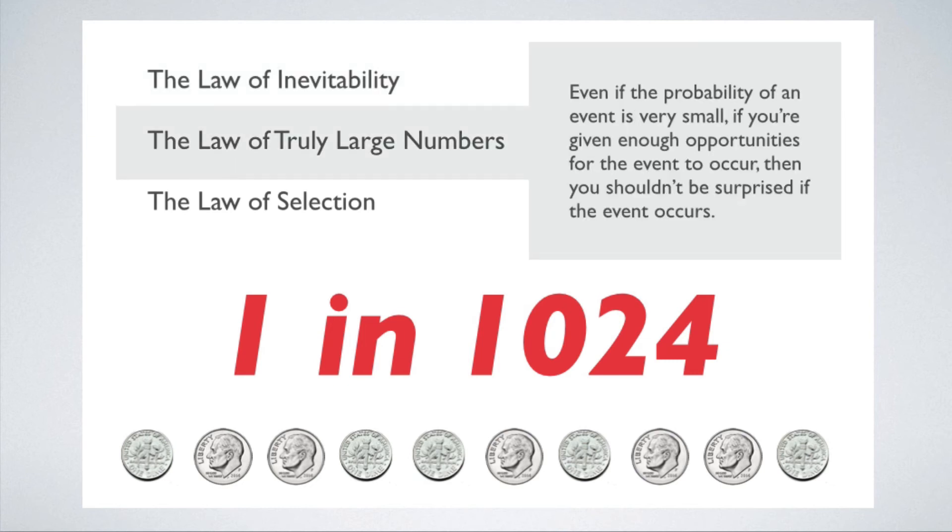What Hand calls the law of truly large numbers may be a bit confusing to those who've done some statistics, because there is a very important principle of statistics known as the law of large numbers. But this isn't that law. This principle is a bit of a play on that wording, but it's saying something different. This law says that even if the probability of an event is very small, if you're given enough opportunities for the event to occur, then the probability of observing that event increases. And if the opportunities become truly large, in his words, then the event becomes almost inevitable.